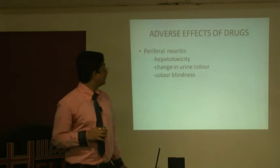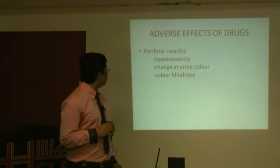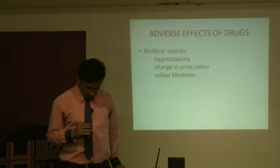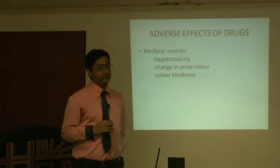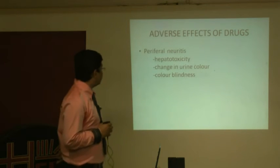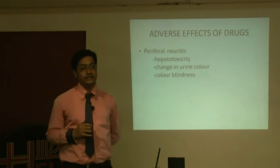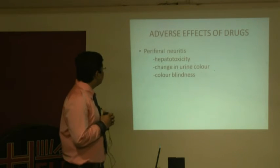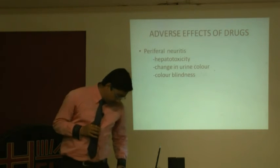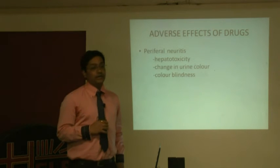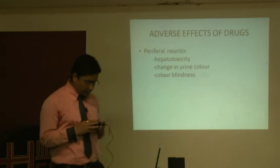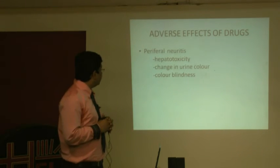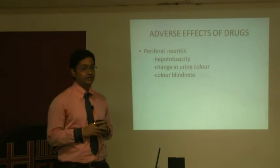Adverse effects of these drugs include peripheral neuritis — tingling sensation or numbness of the hands and legs — which occurs most prominently due to isoniazid, because it causes depletion of vitamin B6 levels. We therefore supplement with vitamin B6 as an adjunct to first-line therapy. Hepatotoxicity is the main limiting factor, causing jaundice — yellowing of the sclera and skin — along with abdominal pain and fever.